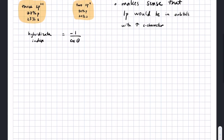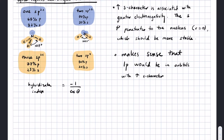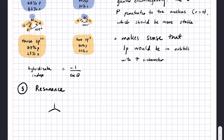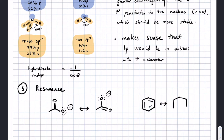A couple more concepts are necessary for valence bond theory. Number five on our list is resonance. In valence bond theory, you don't make the connection between resonance and molecular orbitals. You just say that there are two or more Lewis structures that both describe a molecule, and reality is a hybrid of the two resonance structures. There is also a concept in valence bond theory that resonance is stabilizing.